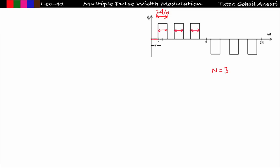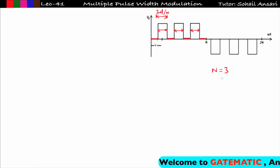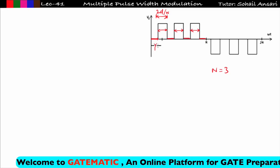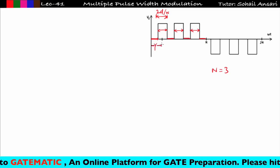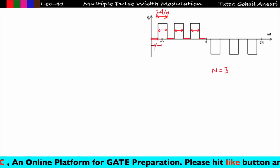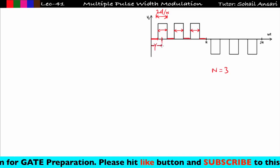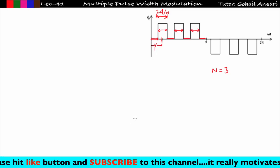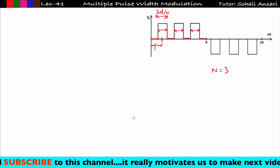In the multiple PWM technique, each pulse width is the same and the space widths are also equal. Per half cycle we are getting 4 space widths for n = 3. Now let us denote the parameter gamma — gamma is the angle from 0 to half of the pulse width. You should know all these things because in order to derive the Fourier series expression you need to know them.